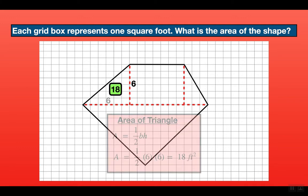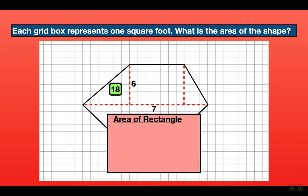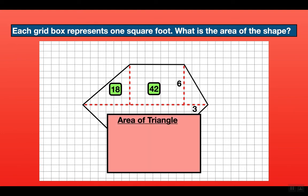Now let's do the rectangle in the middle. The height is 6 and the base is 7. The formula for the area of a rectangle is area equals base times height. So the area equals 7 times 6, giving us 42 square feet. Now let's do the triangle on the right-hand side. The height is 6 and the base is 3. The formula is area equals one-half times base times height. So one-half times 3 times 6 gives us an area of 9 square feet.